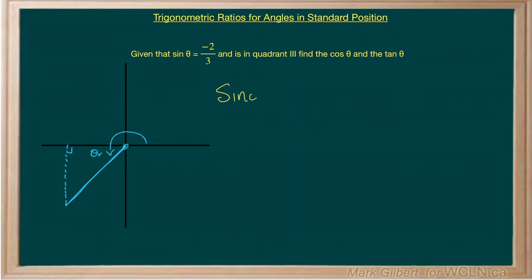Sine of theta is the opposite side over the hypotenuse. Let's label our triangle. This is the opposite side and there's the hypotenuse.